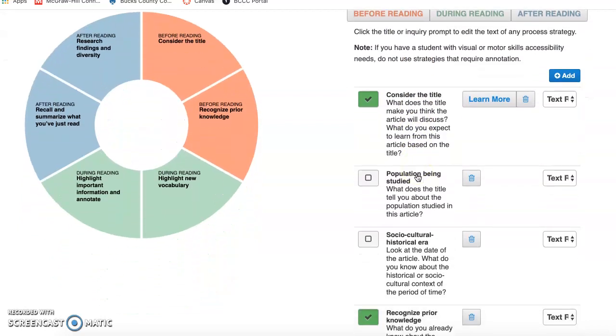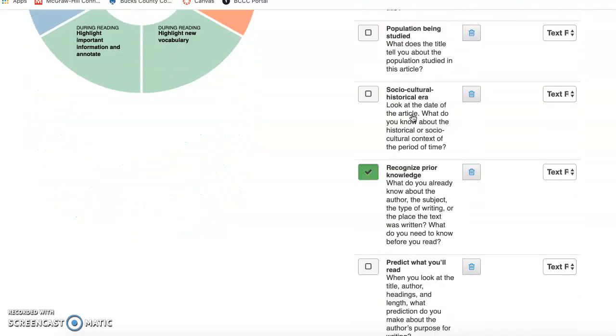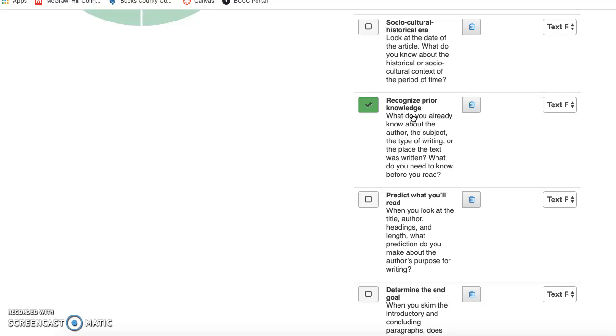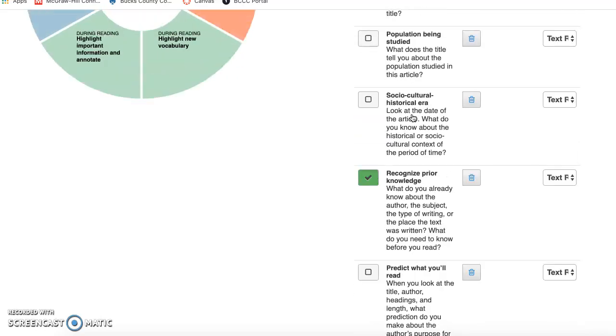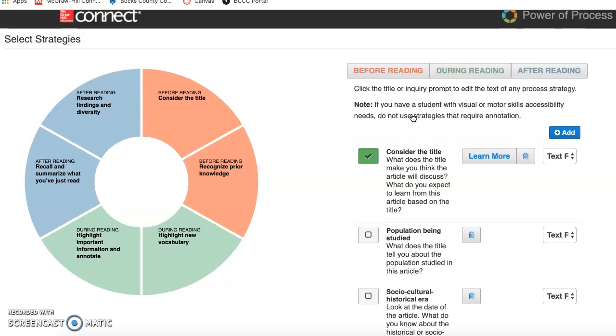So before students even start reading the article, we're going to ask them to consider the title. The other thing I want my students to do is recognize any prior knowledge they have about the topic, and you will see here that you will have two options. You could either have a text response or annotation where they require two highlights and then add comments.